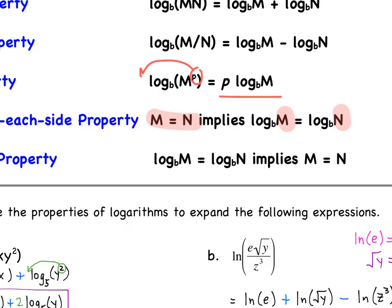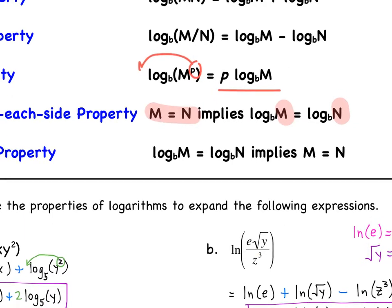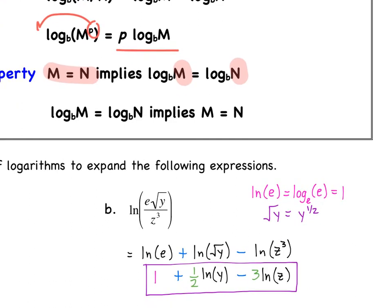For part B, we have the natural log of E times the square root of Y over Z cubed. We have both multiplication and division going on. Multiplying arguments get broken up with addition signs; the dividing argument gets broken up with a minus. So we get Ln of E, plus Ln of the square root of Y, minus Ln of Z to the third power.